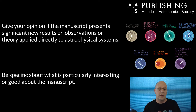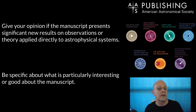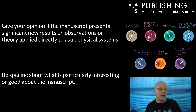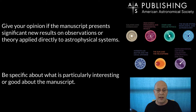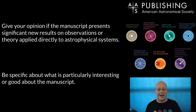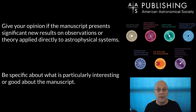Somewhere in your report, give your opinion on whether the manuscript represents significant new results. That's the primary metric for publication, and those significant new results should be on observations or theory applied directly to astrophysical systems. Sometimes papers on interesting topics slide through and might be great stuff, but if they're not directly applied to astrophysical systems, make note of that. So give your opinion on whether the results contain significant new results or not.